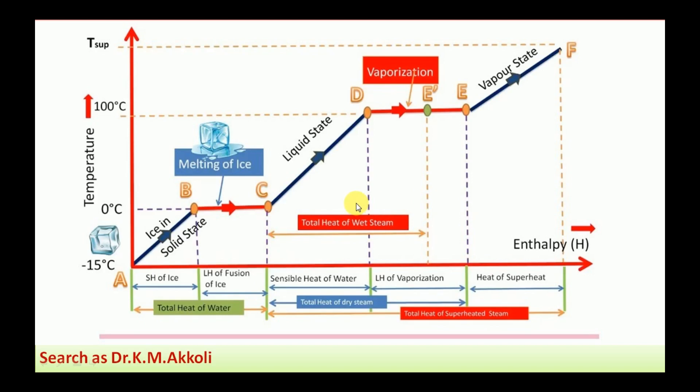This is how we can explain the steam formation from 0 degree Celsius up to the superheated temperature. Steam is used for different applications as it contains energy in the form of enthalpy, which is why steam formation is very important for energy conversion. Thank you for watching and please subscribe to my channel, Dr. K.M.R. Kohli.